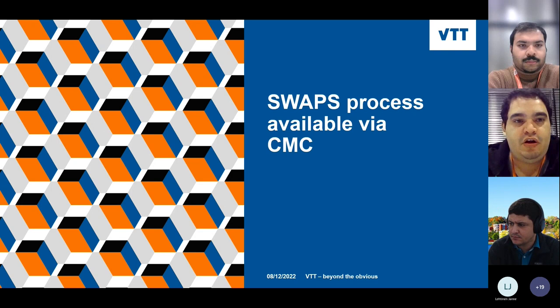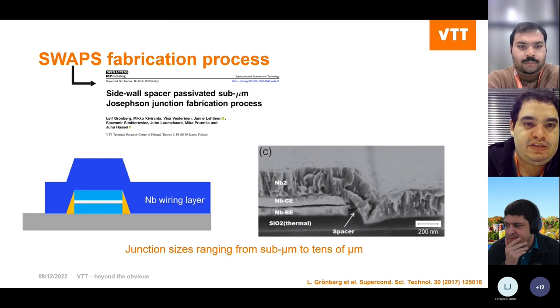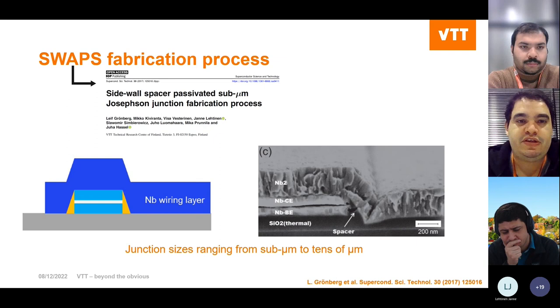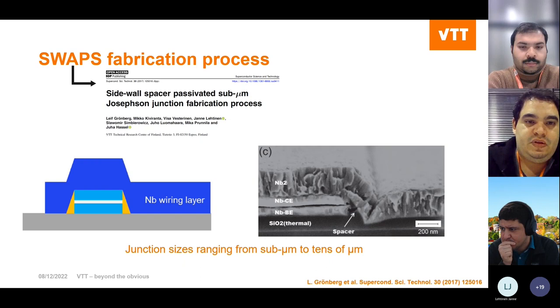Now I'll talk about one of the technologies developed in-house — the SWAPS process, which is now available via CMC for fabrication. SWAPS stands for Sidewall Spacer Passivated Josephson Junctions. It's a method we developed for fabricating Josephson junctions at wafer scale in a reliable and reproducible way. We can fabricate junctions from sub-micron sizes to tens of microns using optical lithography.